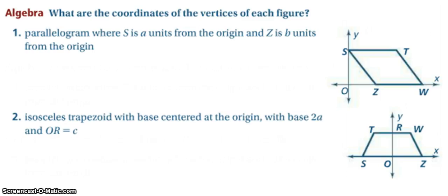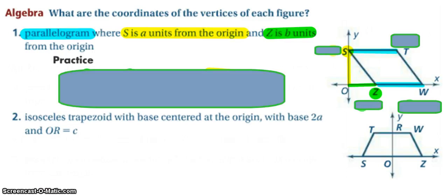Try numbers one and two on your own and then come back to check your answers. All right, so in number one here we're told that S is A units away from the origin, so that tells me what my Y value is, and because it's still sitting on the Y axis I have an X value of zero.